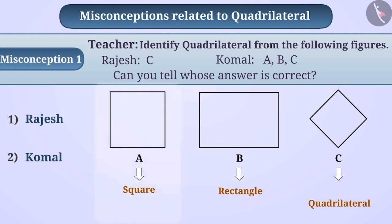Some children consider a square or rectangle to be a different shape from a quadrilateral. They understand that quadrilateral is given in figure C. Therefore, they take Rajesh's answer as correct and give option 1 as the answer. But this is an incorrect answer.